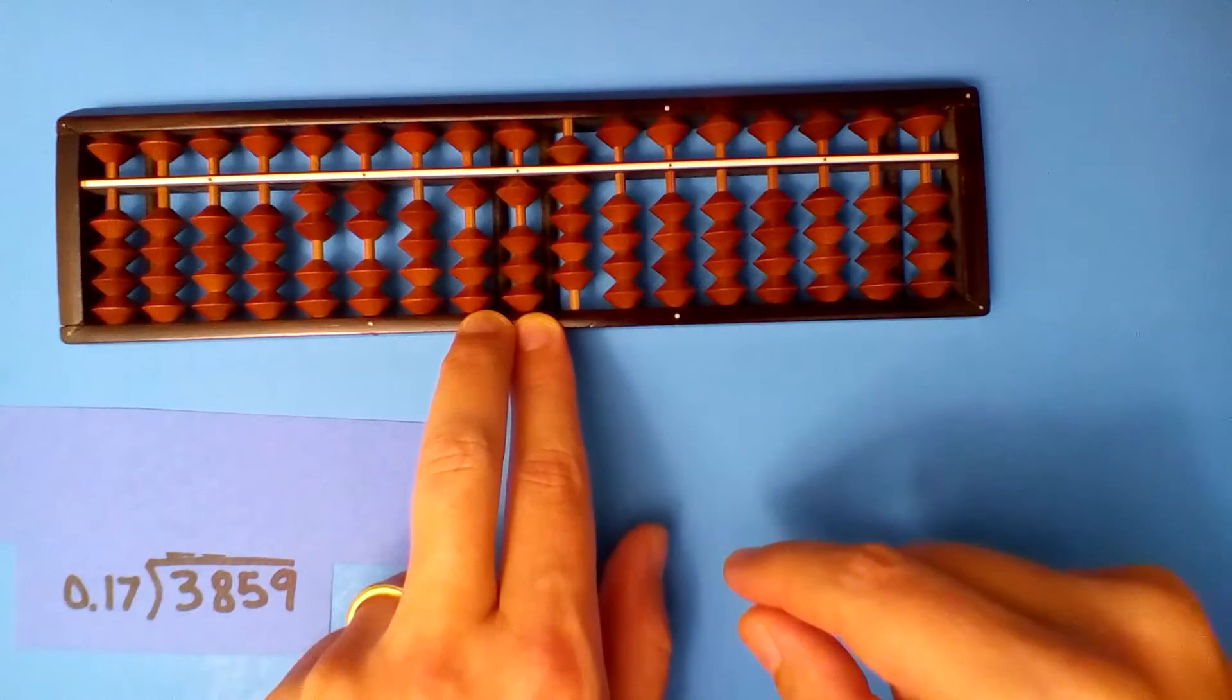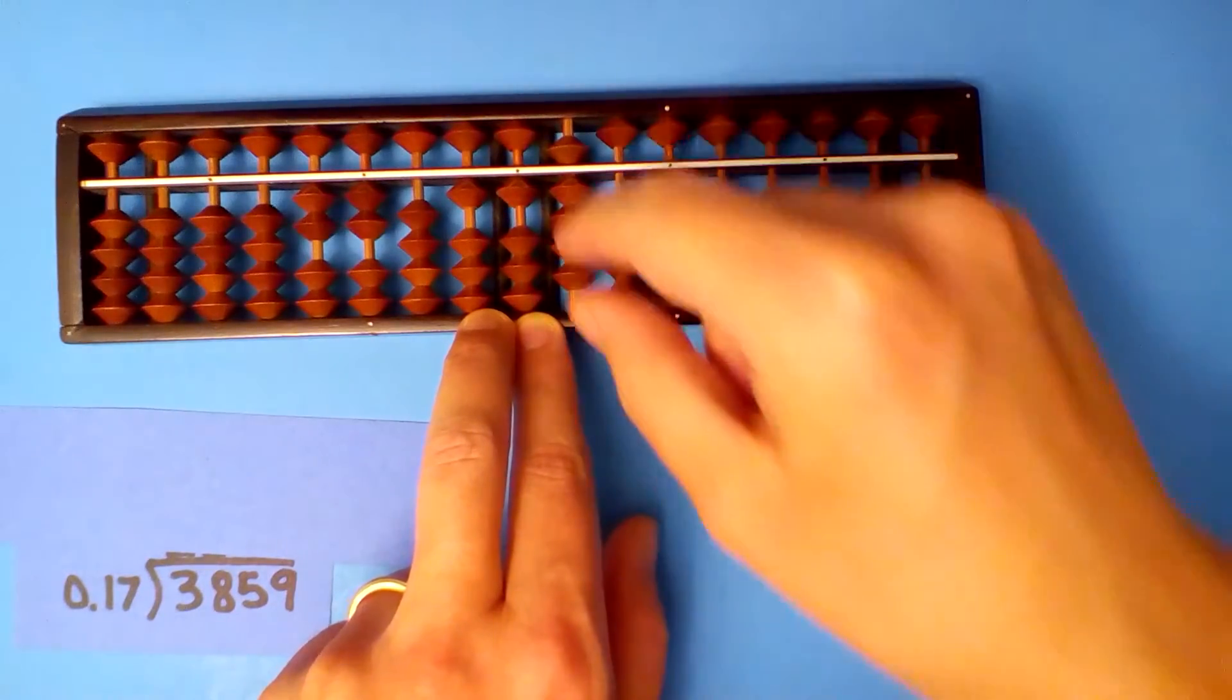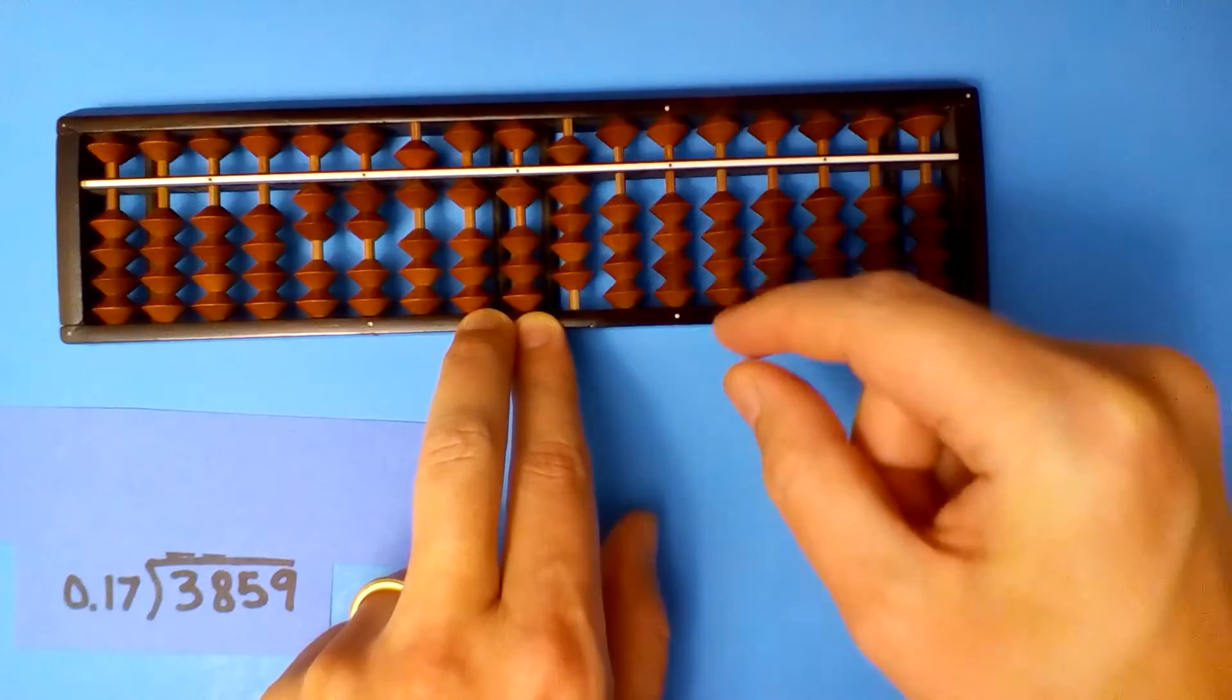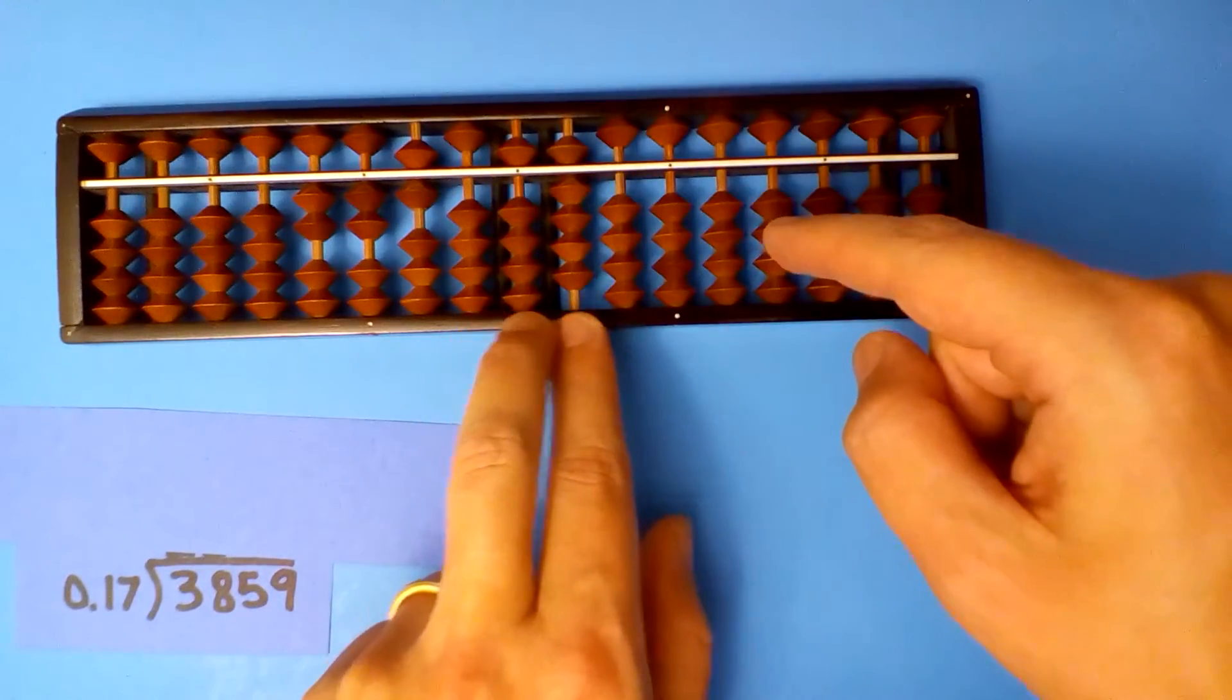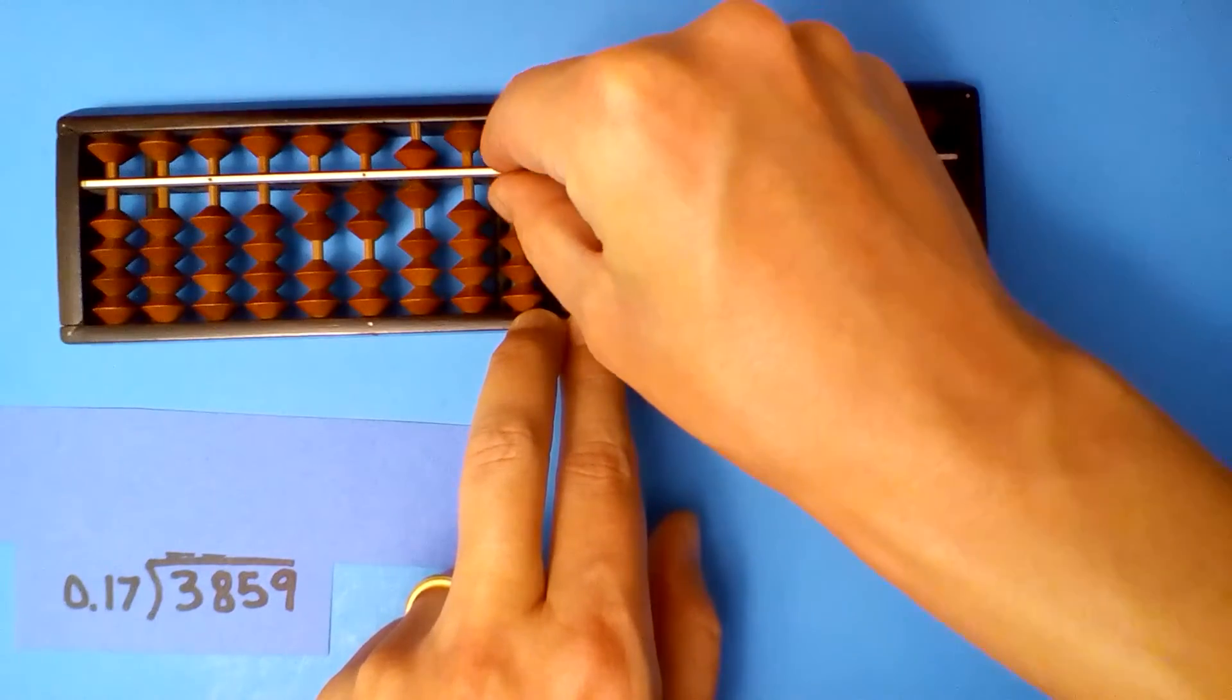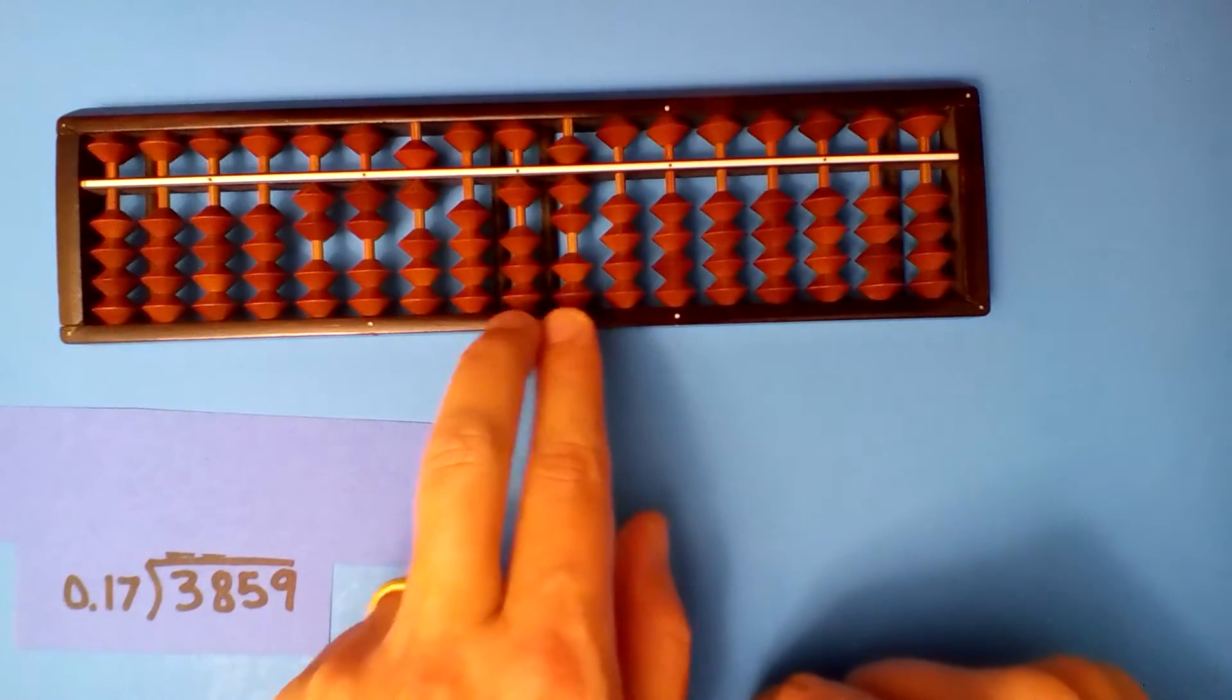How many times does 1.7 go into 11? Six times. 6 times 1 is 6, 6 times 7 is 42. Now we can back up.